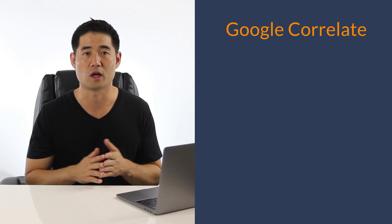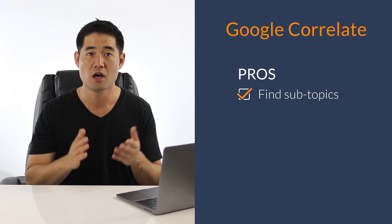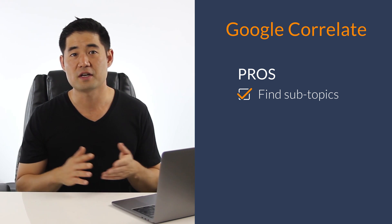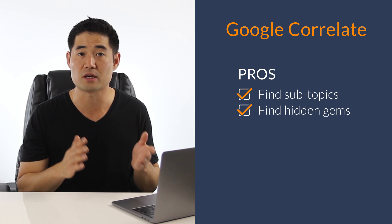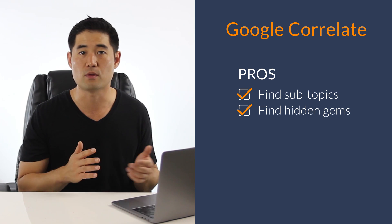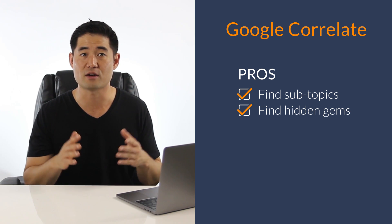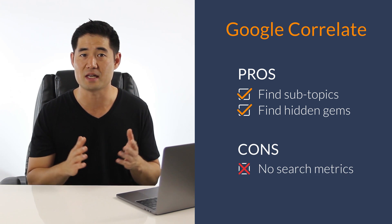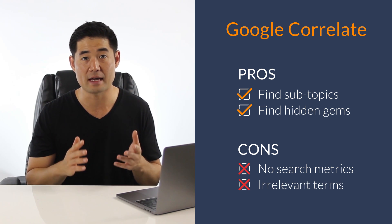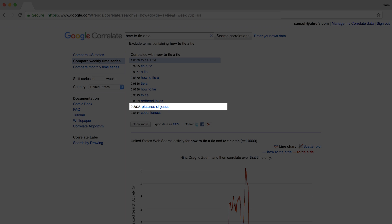The main pro with Google Correlate is that you can find subtopics which will help you maximize coverage on the topic and possibly get more organic keyword rankings. Plus, you can find hidden gems in here since the results are relational and not necessarily bound by phrase match or keyword matching like many premium tools do. The two major cons of this tool are that there are no search metrics that accompany these keywords, and second, you'll often find keywords that apparently have a high correlation but make absolutely no sense.